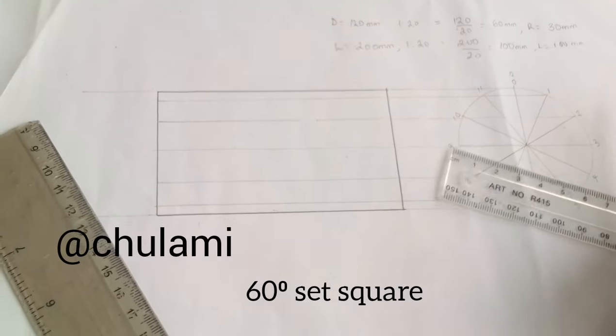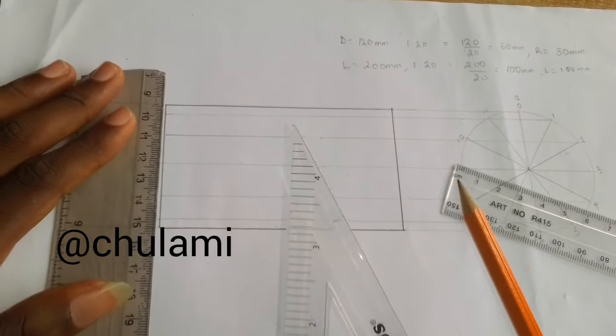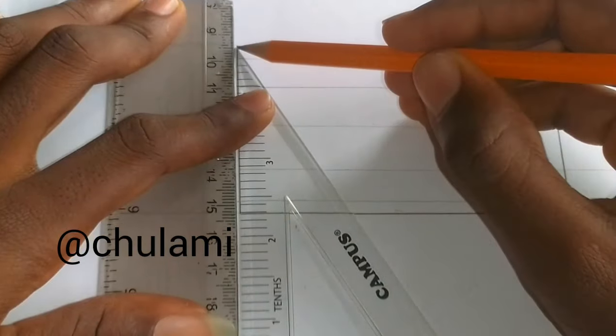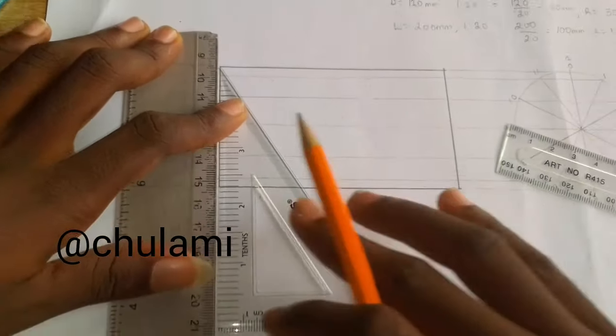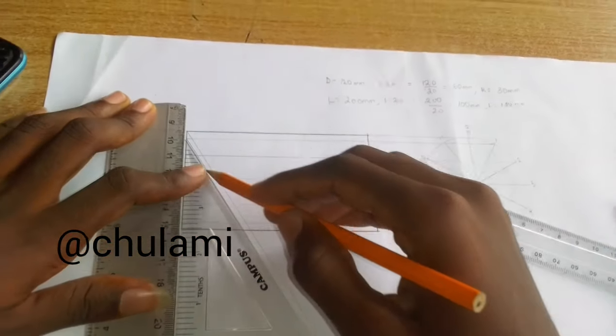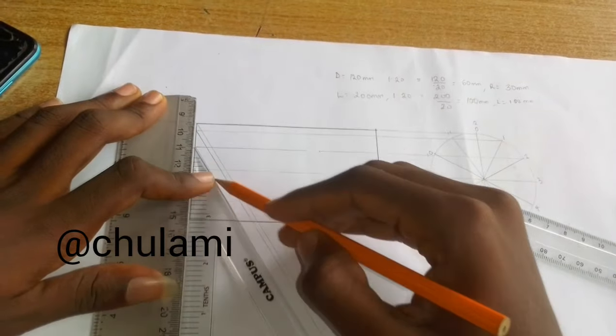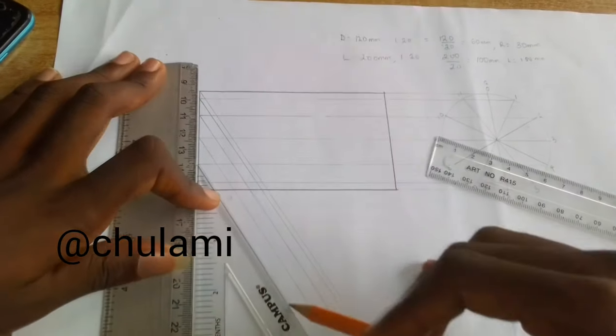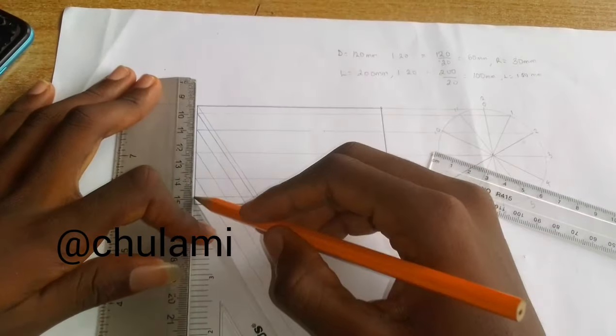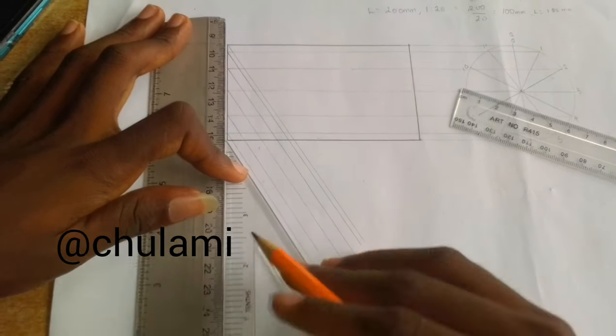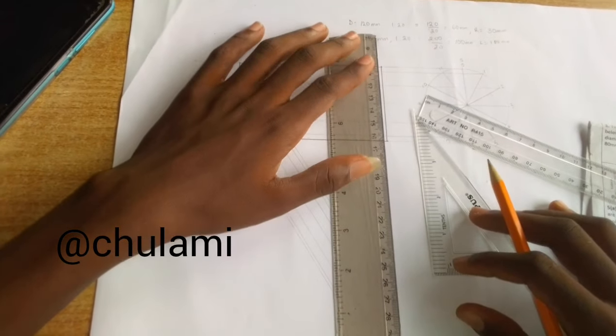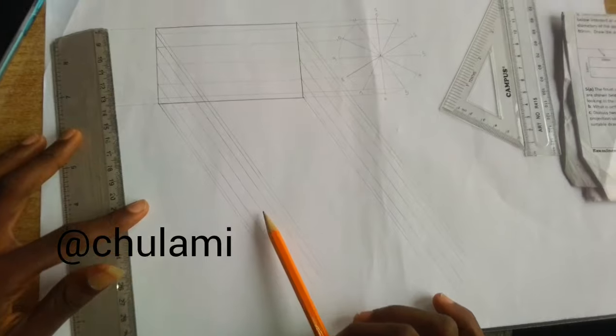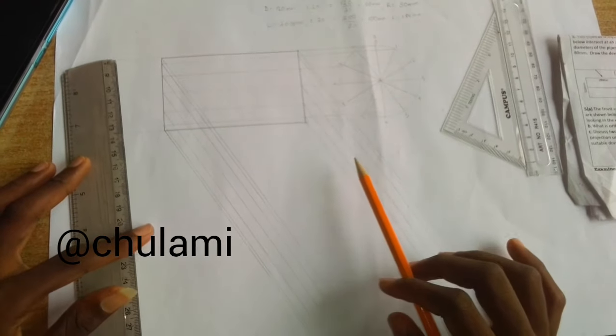Now as you can see, we are finally elongating all our lines from this part to touch it on this square. Now the next thing for us to do, we will need this set square and our ruler. You put it this way and then you elongate all the lines from this part, bring them down. Do the same for all these points.